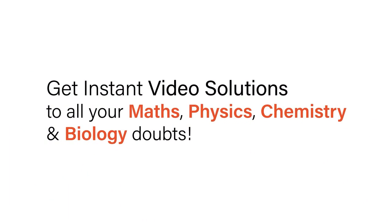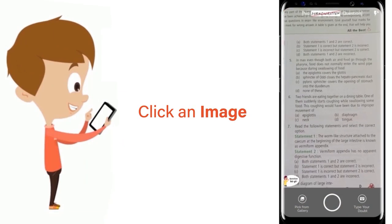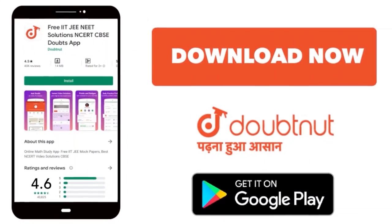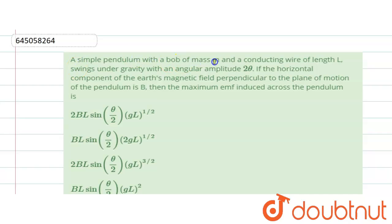With Doubtnet, get instant video solutions to all your maths, physics, chemistry and biology doubts. Just click the image of the question, crop it and get instant video solutions. Download Doubtnet app today. The question is: a simple pendulum with a bob